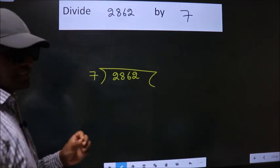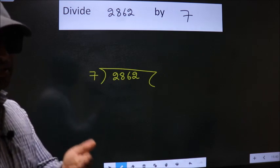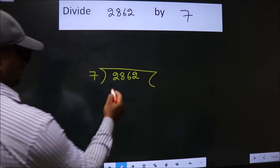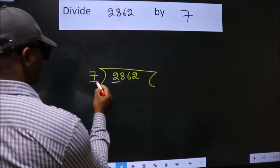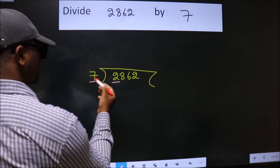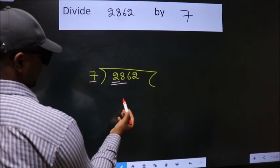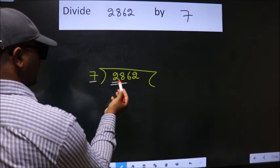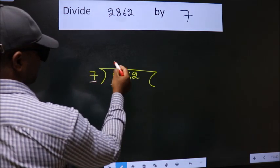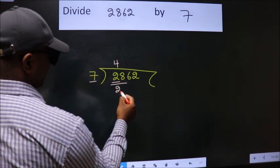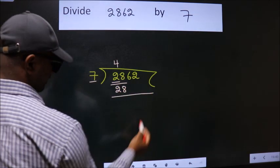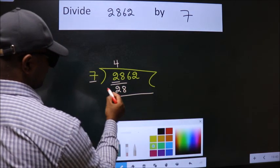This is step one. We have 2 here. 2 is smaller than 7, so we should take two numbers: 28. When do we get 28 in the seven table? 7 times 4 is 28. Now we subtract and get zero.